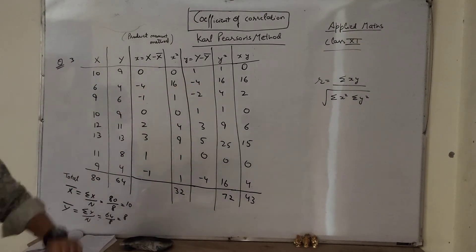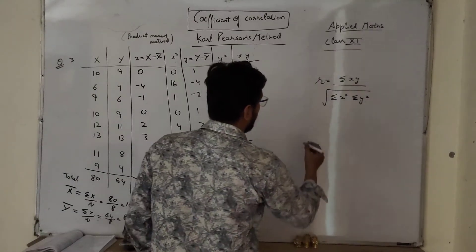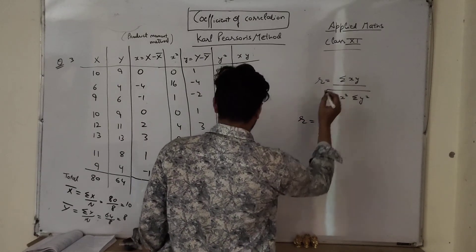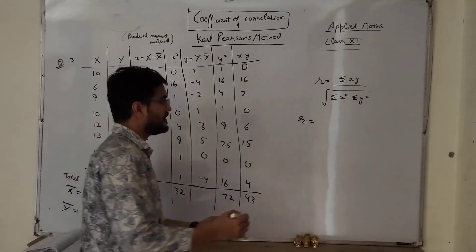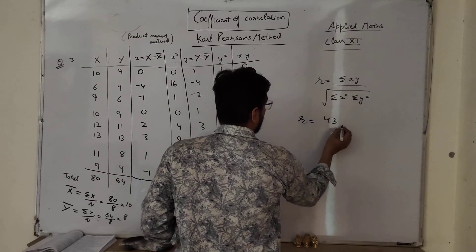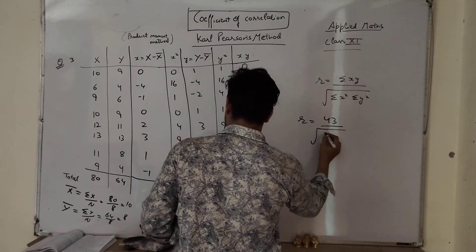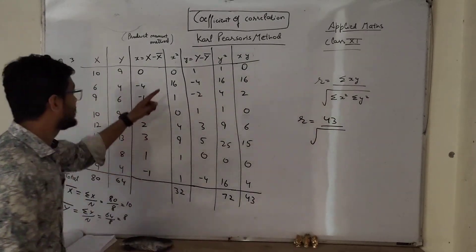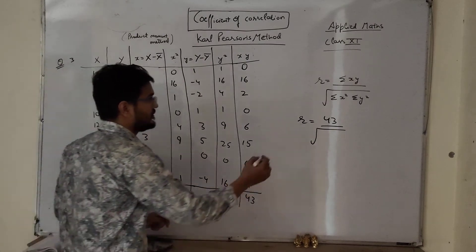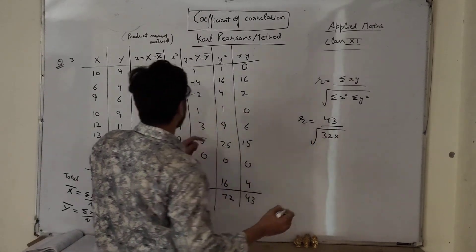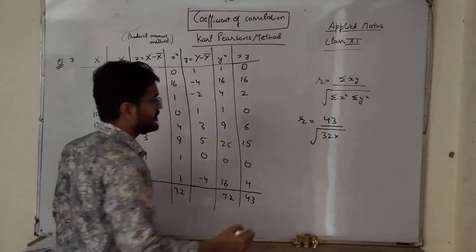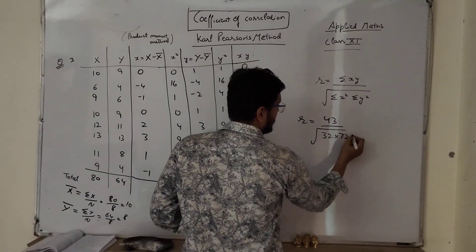Now simply put the values into this formula. So r equals sigma xy, so sigma xy is 43, upon square root of sigma x square, sigma x square is 32, sigma y square, y square is 72.